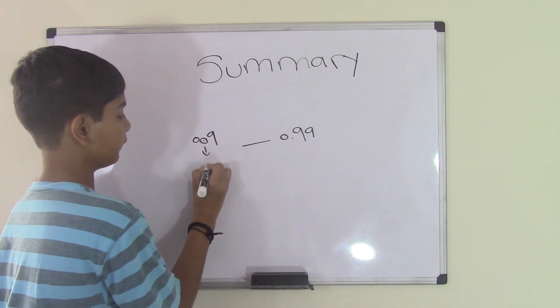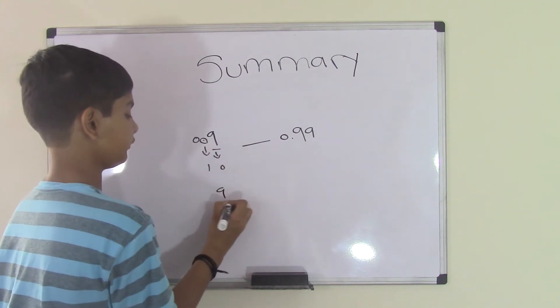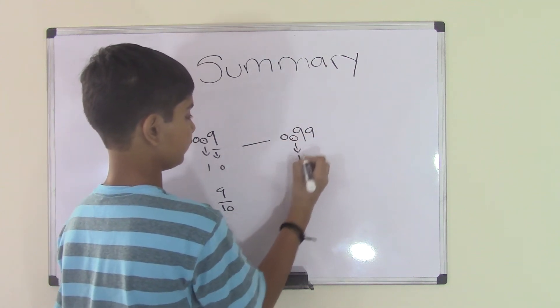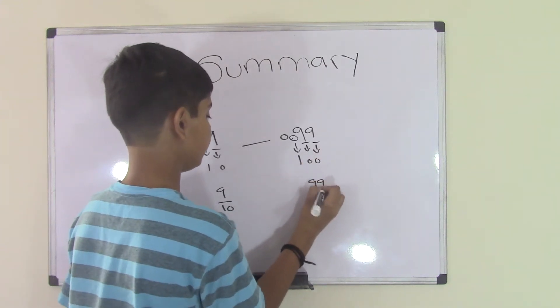Remember, change the decimal point into a 1, number of digits after the decimal point into zeros. In this case, we have 9 tenths. Do the same over here. Decimal point into a 1, number of digits after the decimal point into zeros. 99 over 100.